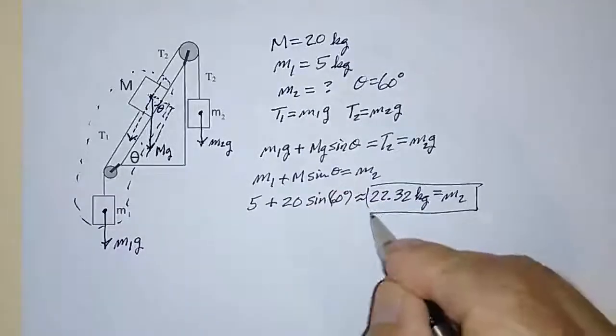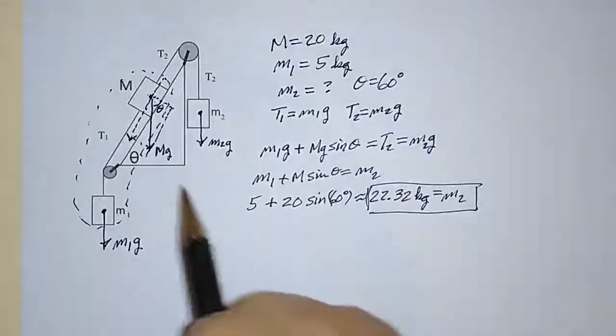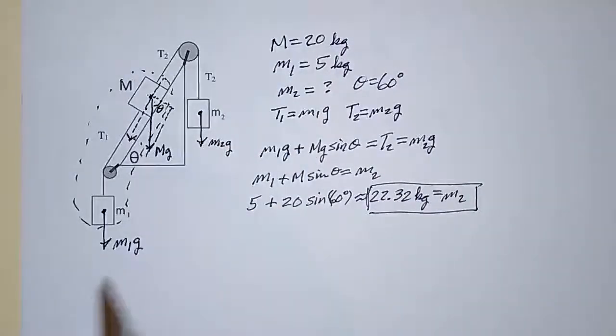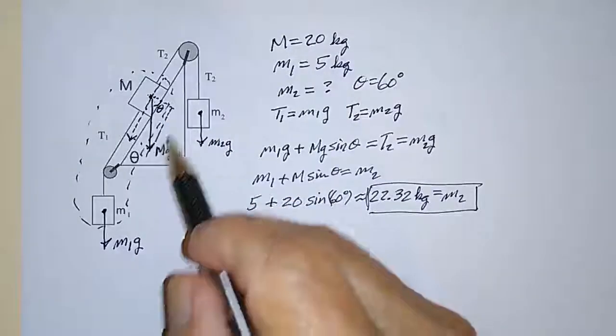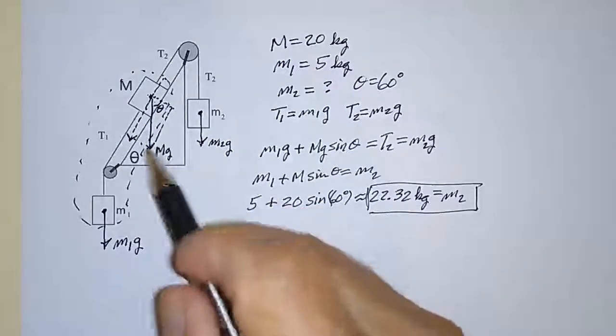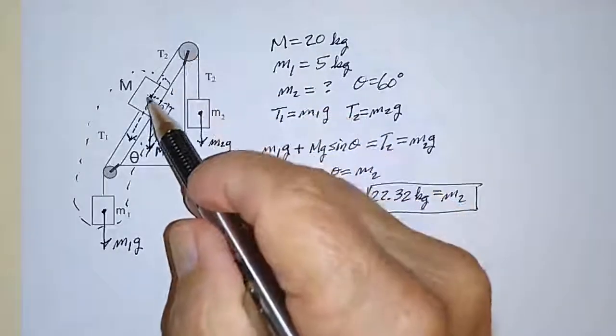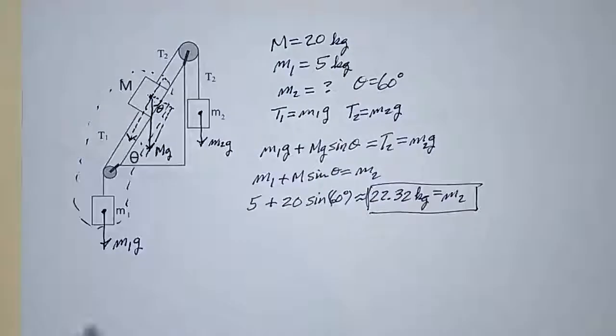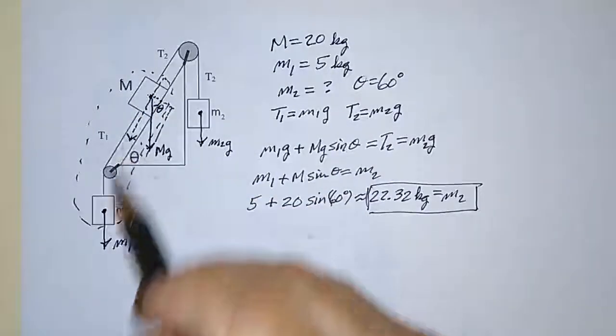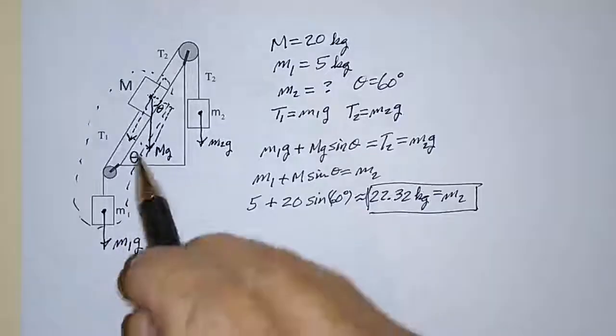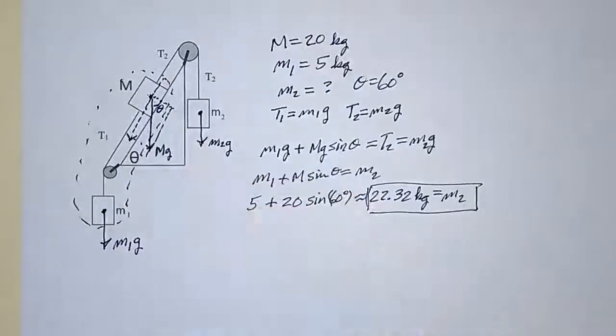So it's considerably bigger than the 5 kg that was required when it was sitting flat on the table. But if you think about it, if the inclined plane were not even here, and you had a pulley up here like this supporting both this one and that one, well then M2 would have to be equal to the sum of these two masses, which would be 25. So it's almost the same, but it's a little bit less because of that incline.